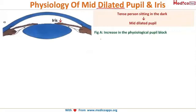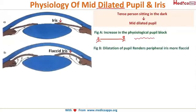To understand this clearly, imagine a piece of cloth held tightly by two people from either side — it becomes very taut. When they let it loose, it becomes flaccid. The same applies here: when the pupil is constricted, the iris is taut and extended, but when it is dilated, the peripheral iris becomes flaccid, as seen in the picture.